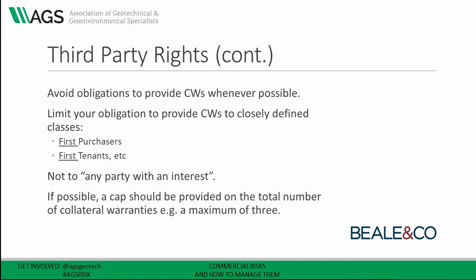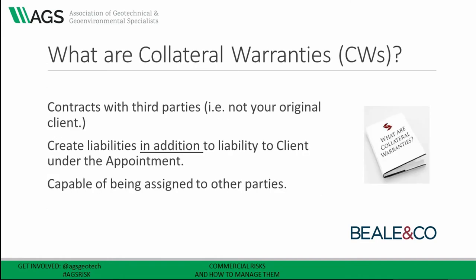Now let's take a look at contracts with third parties. These can take a number of forms, but let's start with collateral warranties, which is the most formal. A collateral warranty is a contract where you warrant to a third party — i.e. someone other than the original client — that you've complied with the terms of your original appointment contract. Collateral warranties are used to create direct contractual links between yourselves and third parties, without which those third parties would be unable to recover any economic loss, such as loss of rent. It also means that if your original employer goes bust, they can sue you directly.